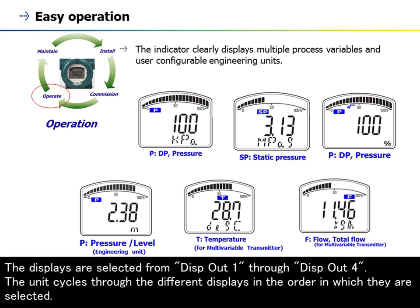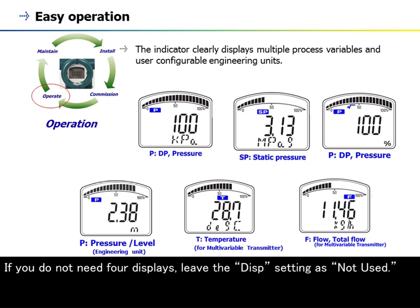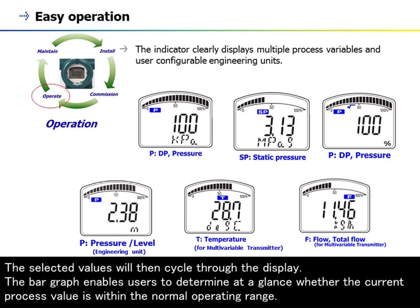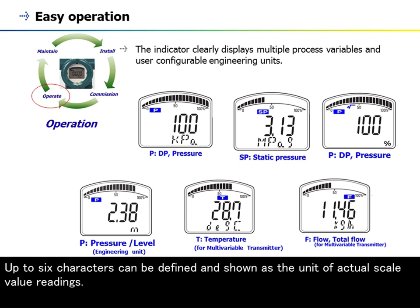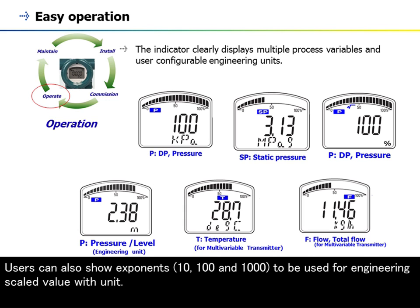The units cycle through the different displays in the order in which they are selected. If you do not need four displays, leave the Disp setting as not used. The bar graph enables users to determine at a glance whether the current process value is within the normal operating range. Up to six characters can be defined and shown as the unit of actual scale value readings. Users can also show exponents 10, 100, and 1000 for engineering scaled value with unit.